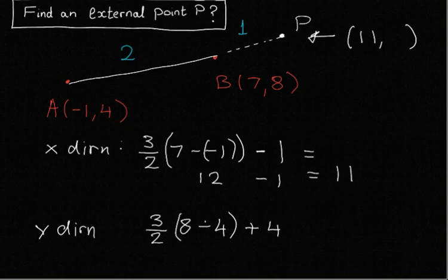So we're going upwards here. We're going past the point B, and we're going to go on again. So we're going to start at 4, and 3 over 2 by 8 minus 4 is 6, and 6 plus 4 is 10.